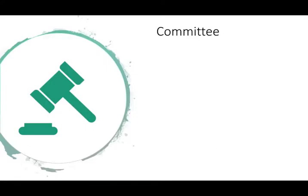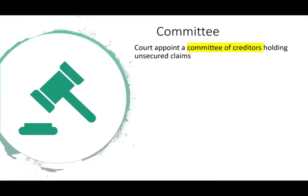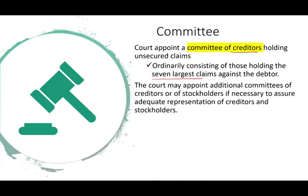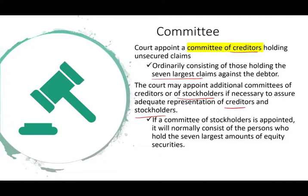The court is supposed to appoint a committee of creditors holding unsecured claims. Usually the committee is composed of the largest seven creditors, because they have the most money involved. The court could also appoint an additional committee of creditors or of stockholders in order to assure both creditors and stockholders are represented. If a committee of stockholders is appointed, it will also be composed of the seven largest equity security holders.